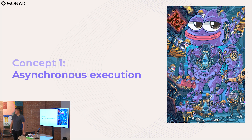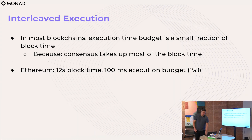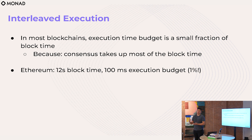So first, asynchronous execution. For context, with most blockchains, consensus and execution are interleaved — and specifically execution is a prerequisite to consensus. In a typical leader-based approach, the leader executes a list of transactions, produces the Merkle root of the state tree, posts those transactions, and sends out a block proposal with all those transactions plus the Merkle root. Everyone else receives that, re-executes, makes sure it matches, and then votes.